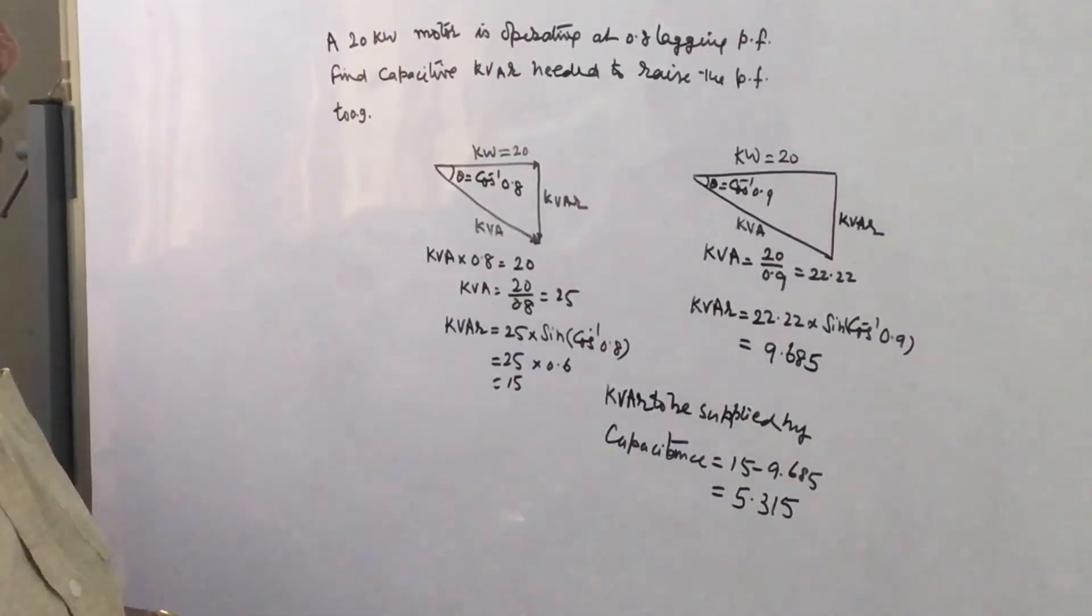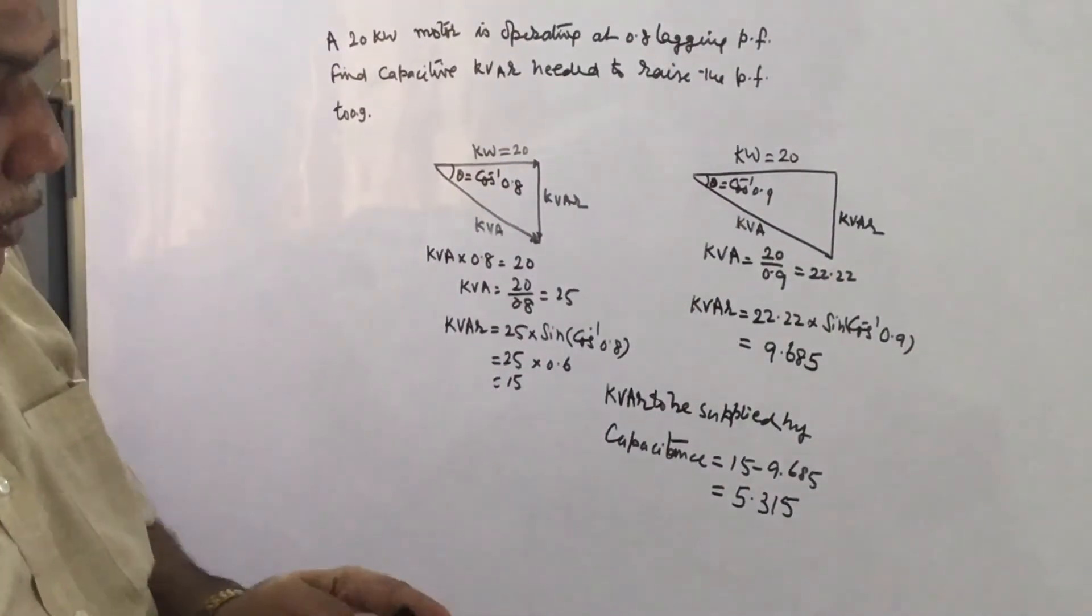So a capacitance having kVAR of 5.315 should be connected to raise the power factor to 0.9 from 0.8. This is how we can find out the kVAR requirement by using this power triangle.